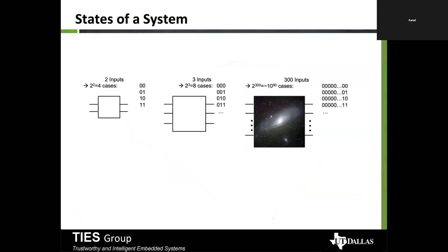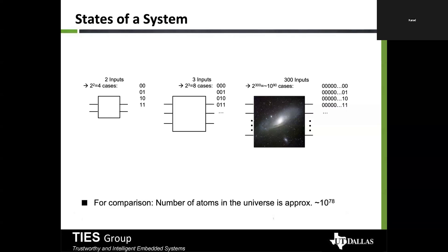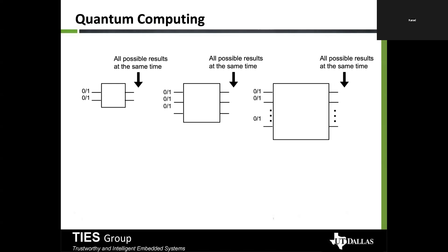Computers today work on a binary fashion — zero or one, like an on-and-off switch. If you have two inputs, the number of states is four; three inputs gives eight states; 300 inputs gives 2×10^90 states. For comparison, the number of atoms in the universe is approximately 10^80. So the number of cases rises exponentially, and it's already huge for classical computing.